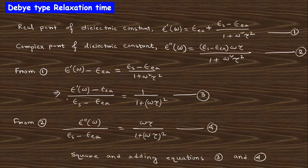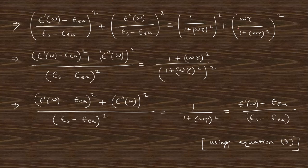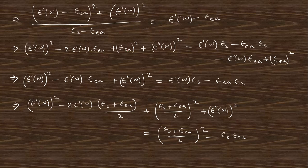From the previous lecture, you know the dielectric constant has two parts: the real and the imaginary part. This is the Debye relation already derived in the previous part — you can watch that for the derivation. From equation one, you can rearrange to get a new equation. From equation two, taking the inward part to the left-hand side gives two equations. Squaring and adding both sides and using equation three to eliminate terms gives a new result.